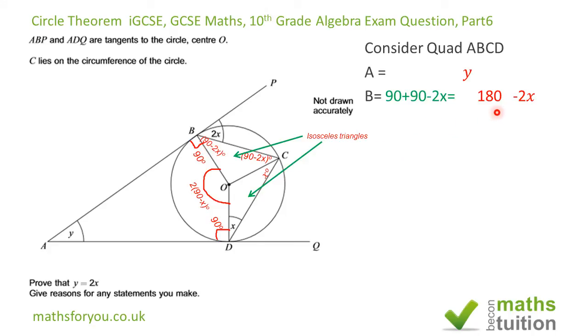Angle C will be 90 minus x, because 90 minus 2x plus x gives us 90 minus x. Angle D will be 90 plus x degrees. When you add them up, we get y plus 360 minus 2x.